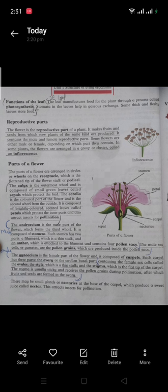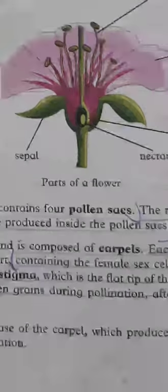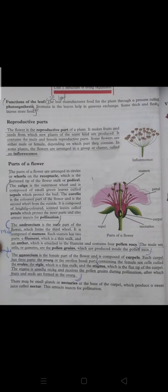Each carpel has three parts: the ovary, or the swollen basal part containing the female sex cells; the style, which is a thin stalk; and the stigma, which is the flat tip of the carpel. The stigma is usually sticky and receives pollen grains during pollination.